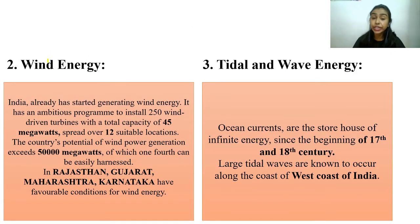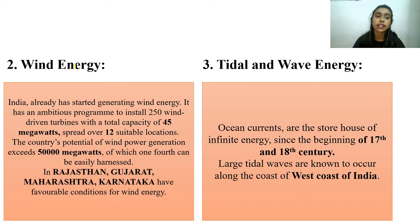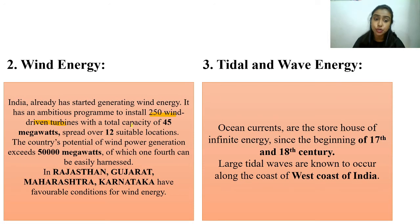The next type is wind energy. Wind energy is made by blowing wind — the kinetic energy is used through turbines to produce energy. India has a huge potential for wind energy. It has already started generating wind energy using 250 wind-driven turbines with a total capacity of 45 megawatts spread over 12 suitable locations, and its total wind power generation potential is 50,000 megawatts, of which one fourth can be easily harnessed.